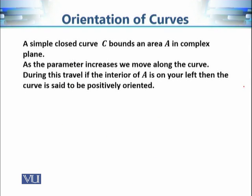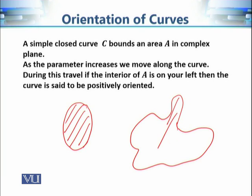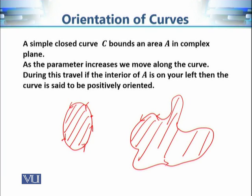When the parameter t increases we travel along the curve, and if it is a simple closed curve, this simple closed curve encloses an area in the complex plane. For example, a circle encloses the following area. Similarly, any other simple closed curve encloses some area in the complex plane, and the parameterization also gives an orientation of travel along the curve.